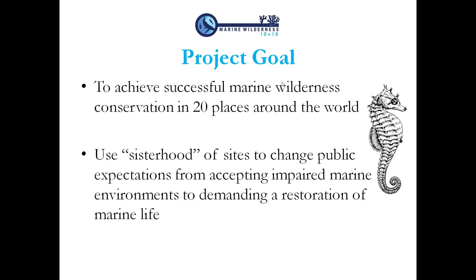Our project goal is to achieve successful marine wilderness conservation in 20 sites around the world. The original idea was to have 10 idyllic marine wilderness sites and compare those to 10 damaged ones. But we decided together as partners not to put down the 10 that were degraded and rather look at these 20 on a spectrum at any given time — ranging from intact and ecologically functioning to impaired — and also looking at management from well managed to not managed at all. We use these 'sisterhood of sites' to support each other: when there's a threat to one, the others will support through media attention and best practices to work toward strong protections.